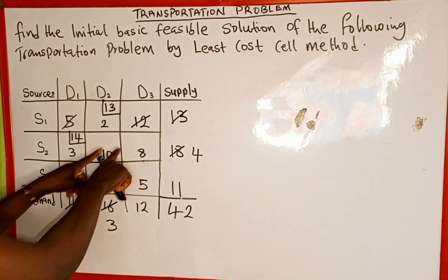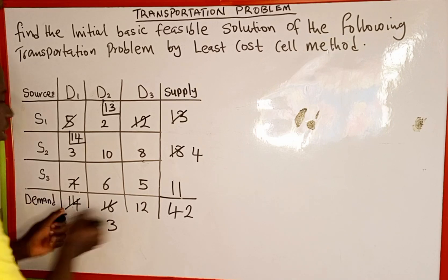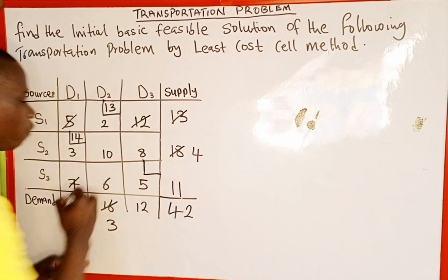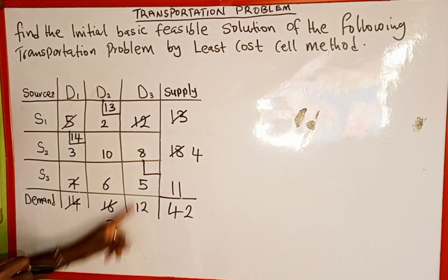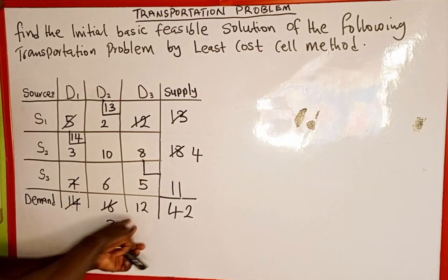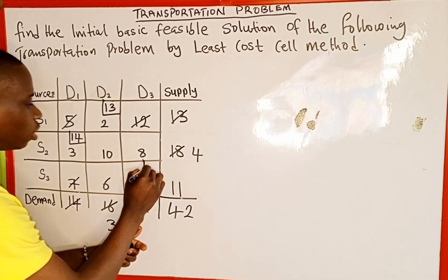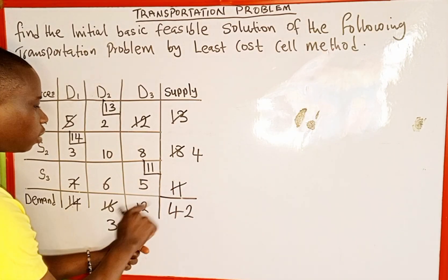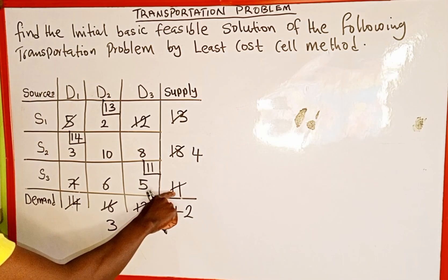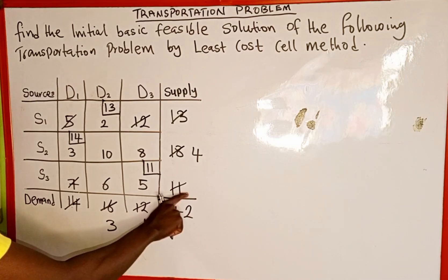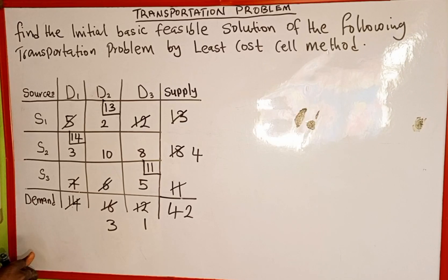We check the undeleted values. The least is 5, so our next allocation is on cell 5. We compare the corresponding supply and demand: 12 and 11. The minimum is 11, so we allocate 11 here. We cancel supply of 11, and 12 minus 11 leaves 1 remaining demand. Since we've used the entire supply of 11, we delete the remaining values in that row.